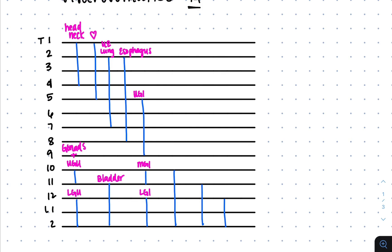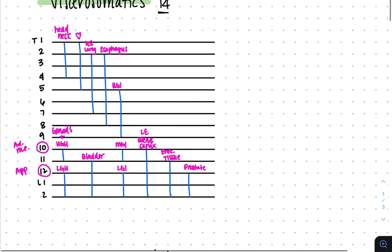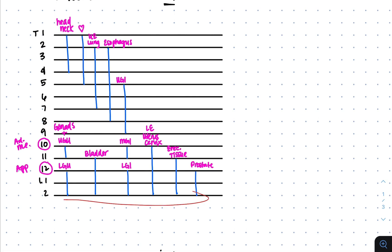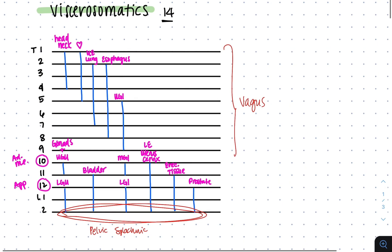On the other side you'll have uterus, cervix, and lower extremity. This is your erectile tissue and prostate. You'll circle T10 and T12 — T10 is your adrenal medulla, and T12 is your appendix. Any of these that touch the bottom will originate from the pelvic splanchnics. If they ask for parasympathetics, the rest are vagus — if it doesn't touch the bottom, it originates from the vagus.